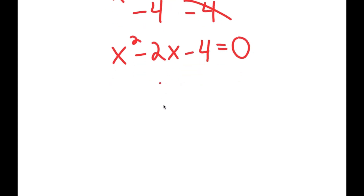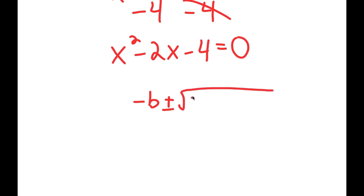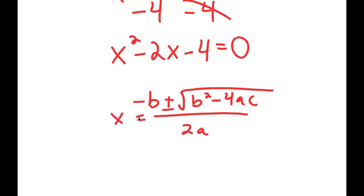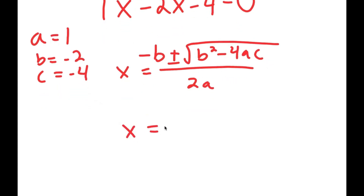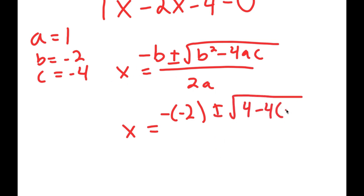Now from here, to solve this I'm going to use the quadratic formula, which is negative b plus or minus the square root of b squared minus 4ac, all over 2a. So in this case, a is equal to 1, b is equal to negative 2, and c is equal to negative 4. So I get x is equal to negative of negative 2, plus or minus the square root of negative 2 squared — which is 4 — minus 4 times a, which is 1, times c, which is negative 4, all over 2 times 1.